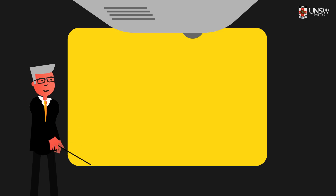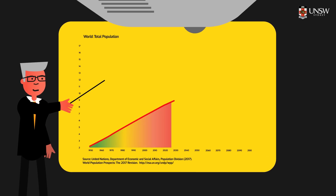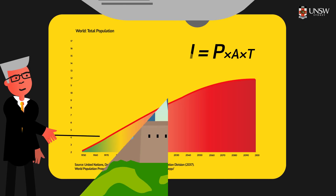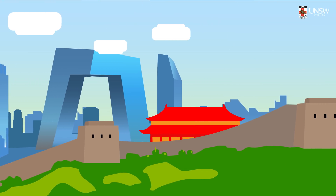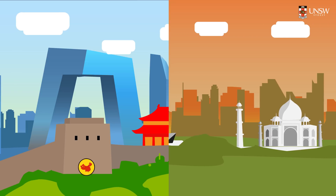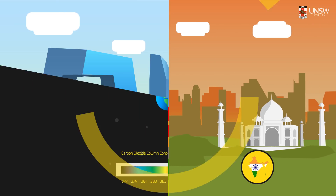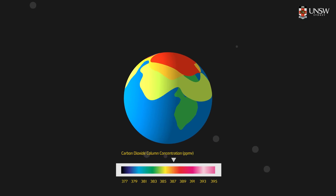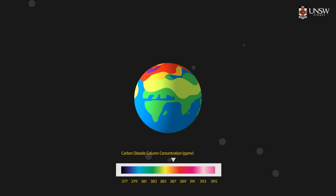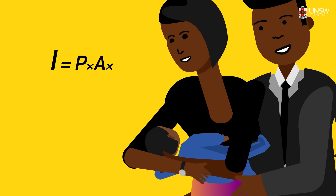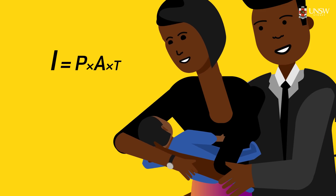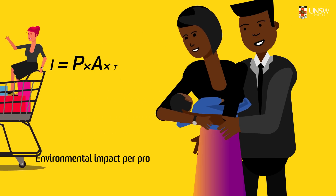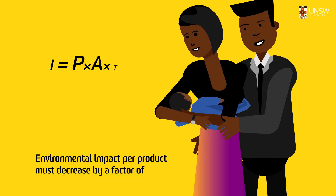According to the UN, the world's population is predicted to reach 11.2 billion in the year 2100 and will level off shortly thereafter. Material standards of living will grow strongly in newly industrialized countries such as China and India. However, environmental impact has already exceeded sustainable levels in many dimensions such as greenhouse gas emissions. So, what exactly is the challenge? It turns out that in order to counterbalance the expected growth in population and affluence, the technology factor, or environmental impact per product, must decrease by a factor of up to 20.